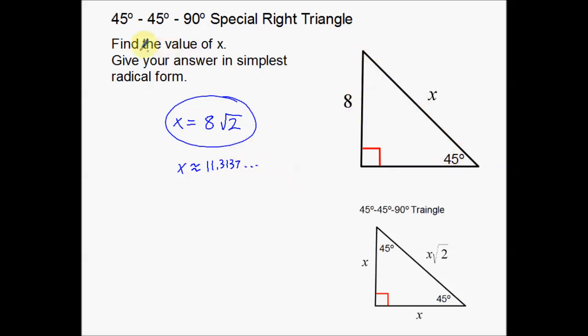Also the directions here say find the value of x, give your answer in simplest radical form. That's why I circled this one, because 8 times the square root of 2, that is simplest radical form. This decimal is definitely not radical form, so we would not include that in our answer. So that's a pretty simple first example.